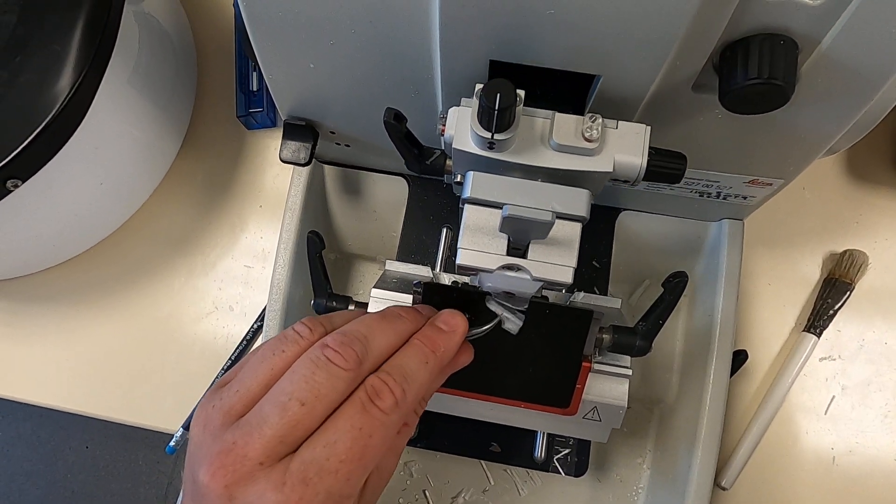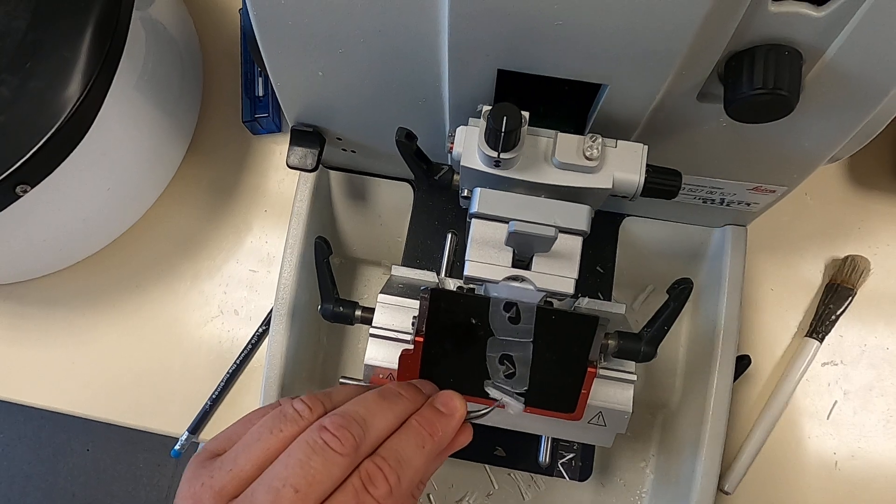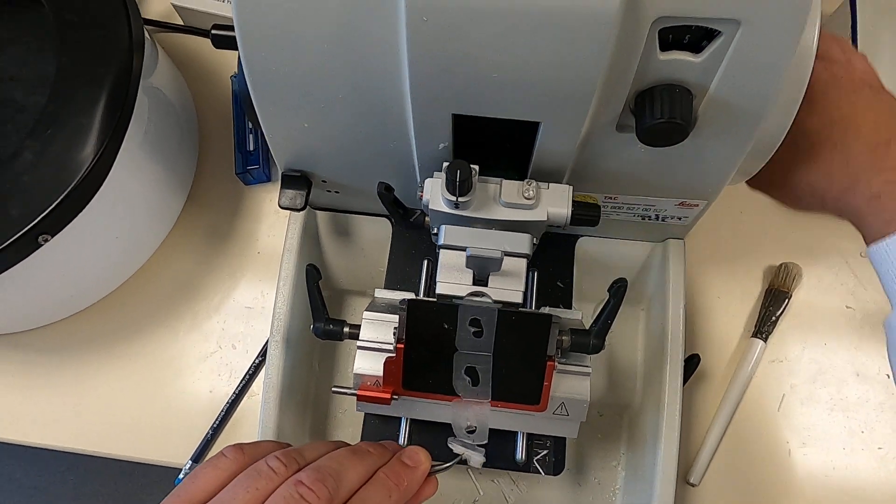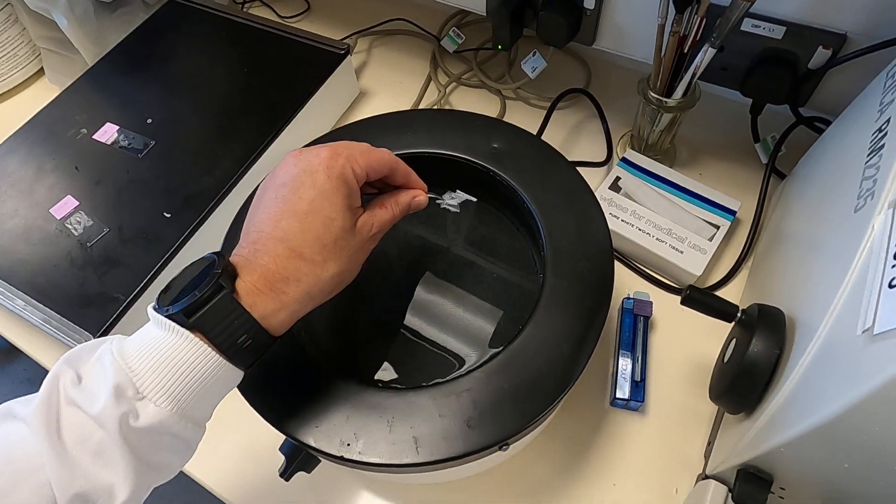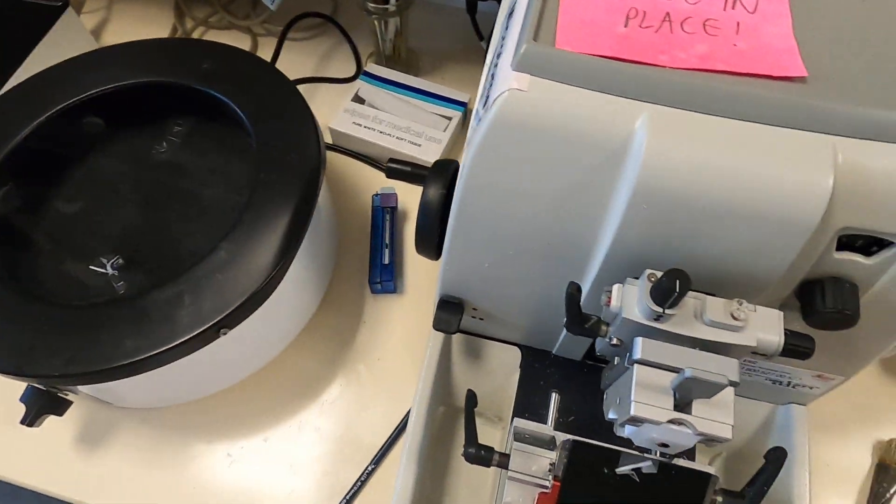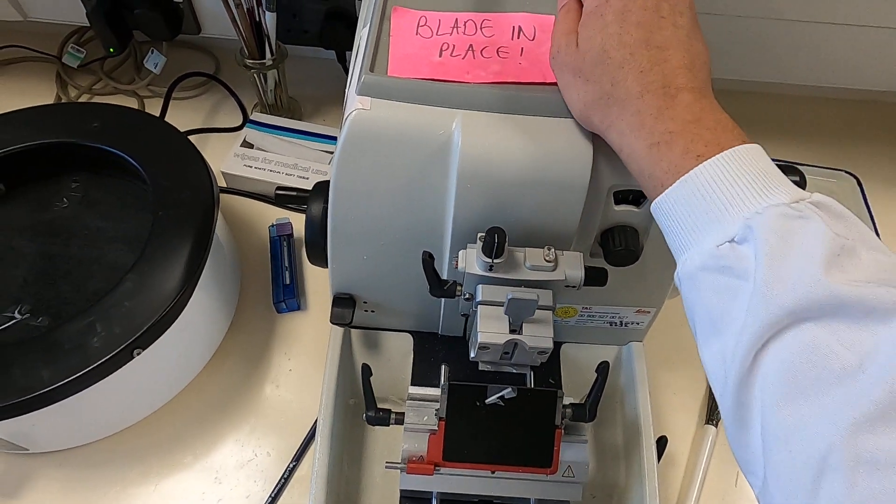Then you just get some debris and you pull it off. This one here is not very well processed, so you're not actually getting anything, but it serves just to show you the technique. You float it out, and that is how you cut a section.